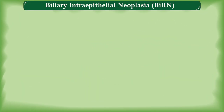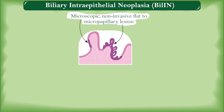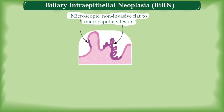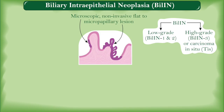Biliary intraepithelial neoplasia, or BilIN, is a pre-malignant condition. It is a microscopic, non-invasive, flat to micropapillary lesion confined to the lumen of the gallbladder or bile duct. A two-tier classification is followed nowadays. Former BilIN 1 and 2 are now classified as low-grade dysplasia, whereas BilIN 3 corresponds to high-grade dysplasia, also categorized as carcinoma in situ.